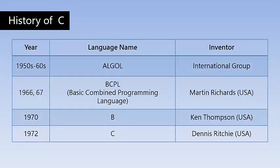Look at the history table showing the years of invention of different languages. The first ever high-level programming language is called ALGOL — an abbreviation for Algorithmic Language — which is the ancestor of C, developed in the 1950s and 60s by an international group. After a few years, a language called BCPL, standing for Basic Combined Programming Language, was developed by Martin Richards in 1966-67. Then came language B in 1970, developed by Ken Thompson, which is the successor of BCPL. All these languages had loopholes, which led to the invention of new languages.